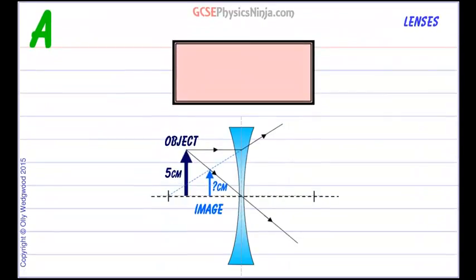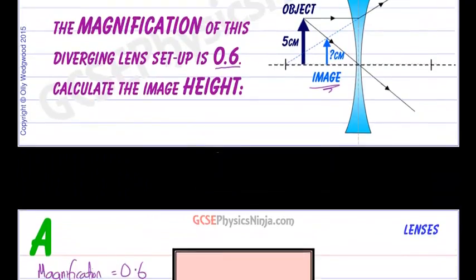Let's do that using the same approach as always for calculations. We're going to list the data. We know that the magnification equals 0.6, and the object height is 5 cm.